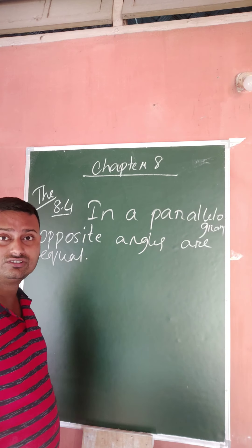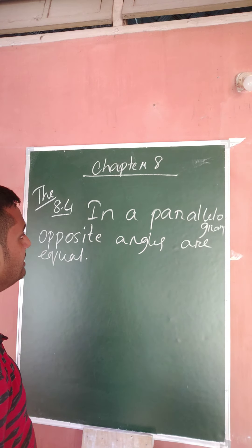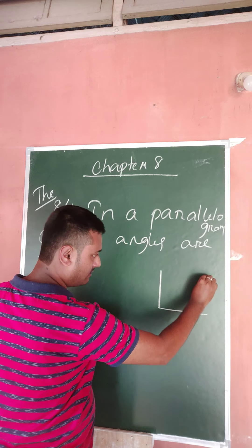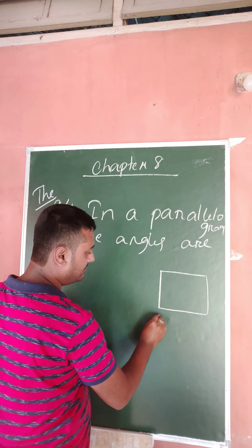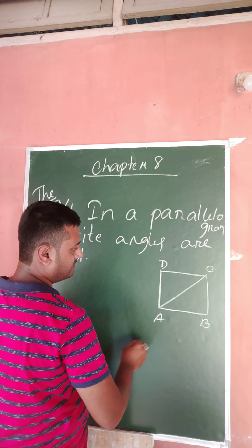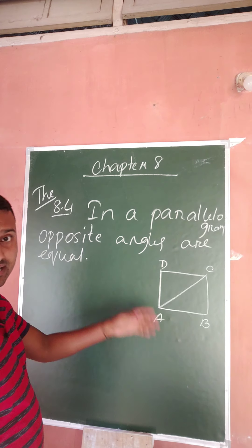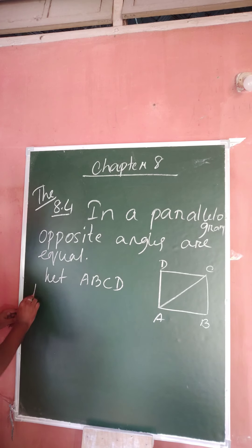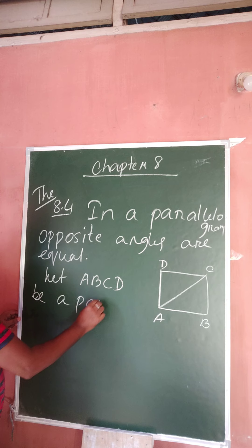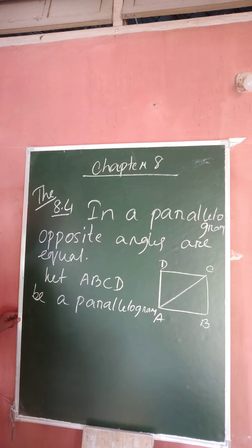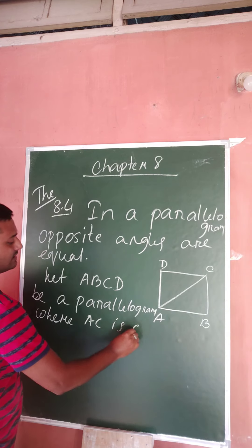So you can use that opposite sides are equal to prove this theorem. But without using that opposite sides are equal, you can also prove that in a parallelogram opposite angles are equal. Let us take one parallelogram ABCD, where AC and BD are diagonals. So let ABCD be a parallelogram where AC is a diagonal.